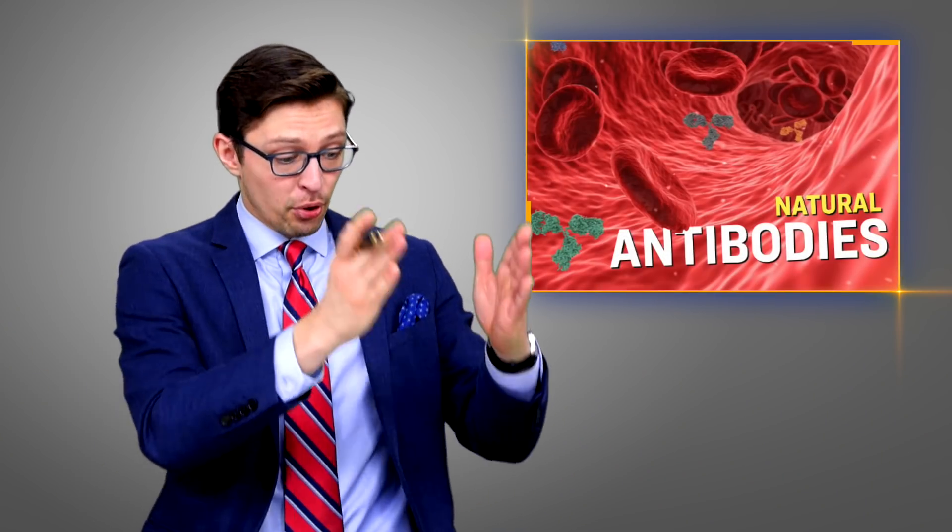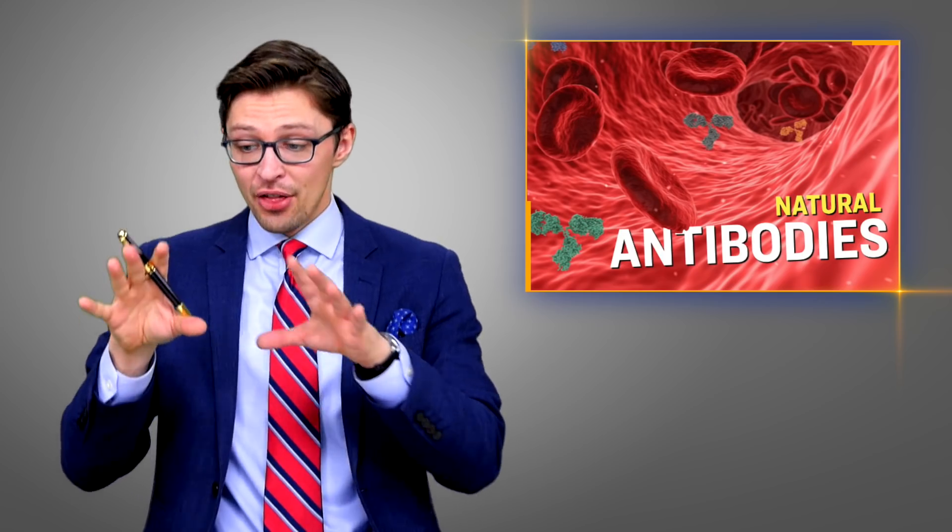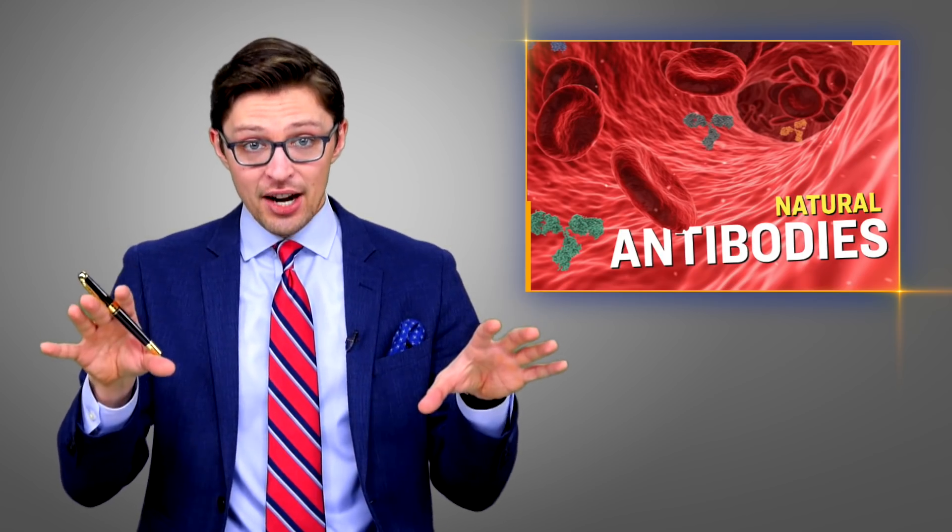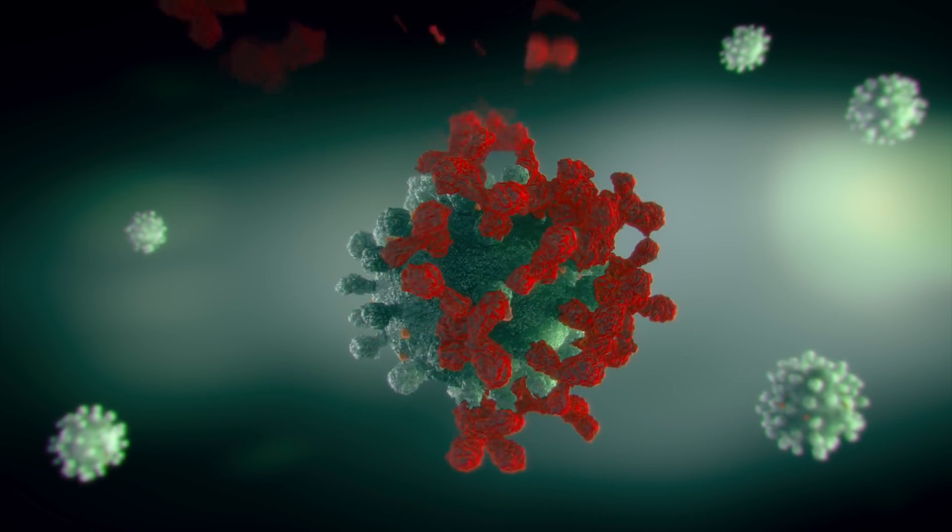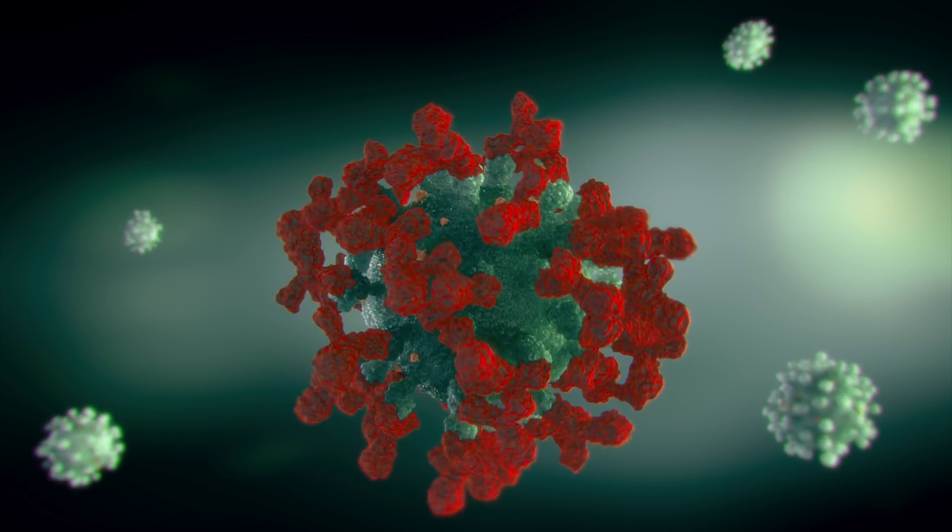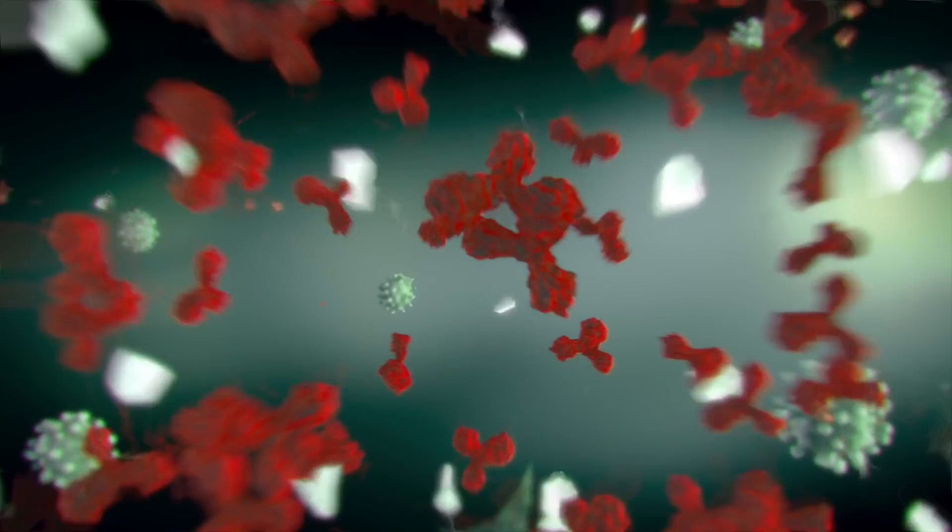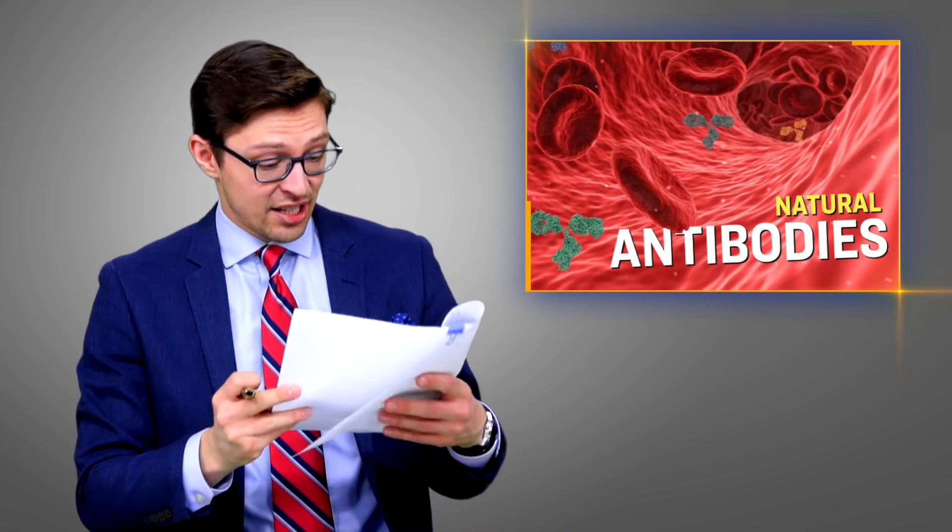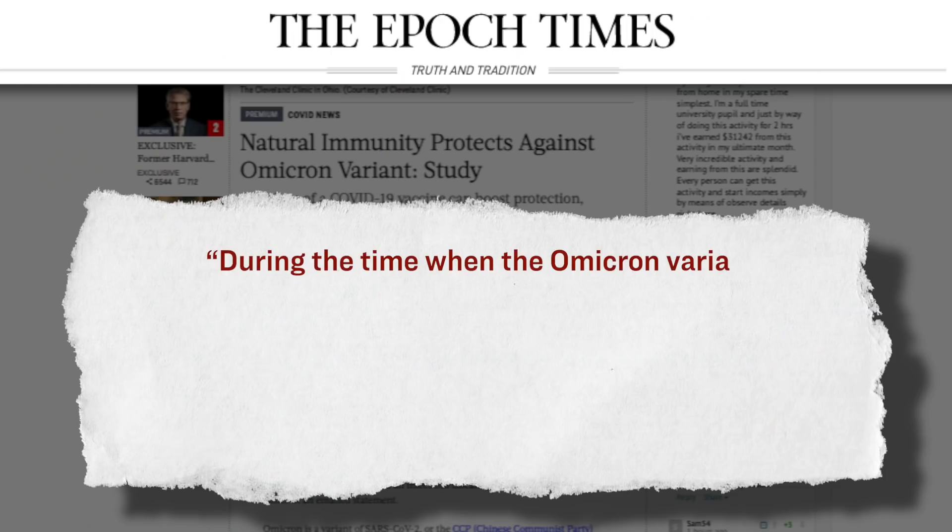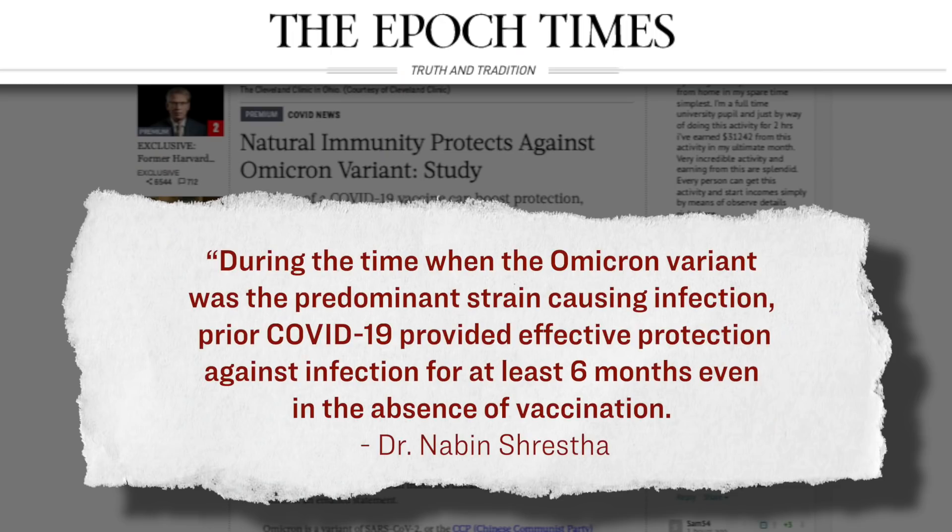Getting back to the study, what the researchers did was they took this data of these employees and put them into different categories depending on their vaccination and natural immunity statuses. What they found was that even without vaccination, having the natural antibodies from a prior infection proved to be very effective at protecting the individual from a future COVID infection. Here's how the lead researcher explained his findings: 'During the time when the Omicron variant was the predominant strain causing infection, prior COVID-19 provided effective protection against infection for at least six months, even in the absence of vaccination.'